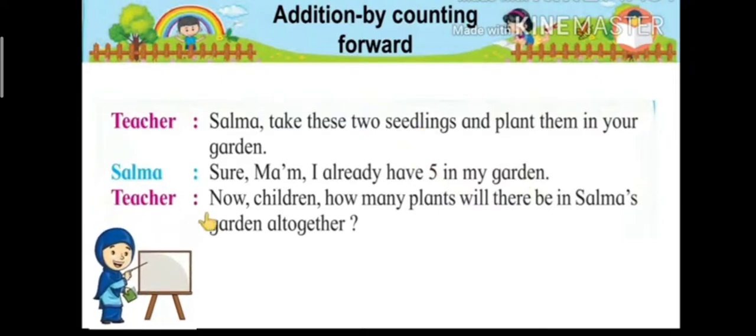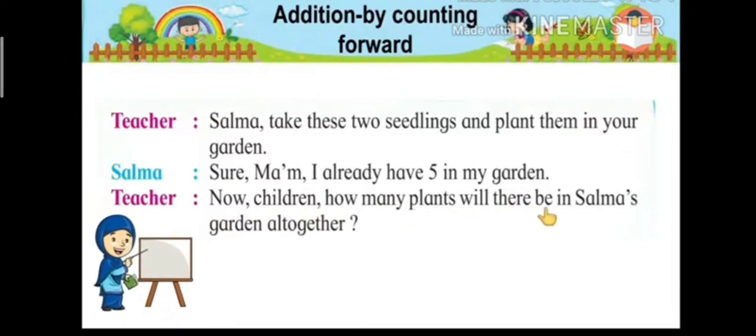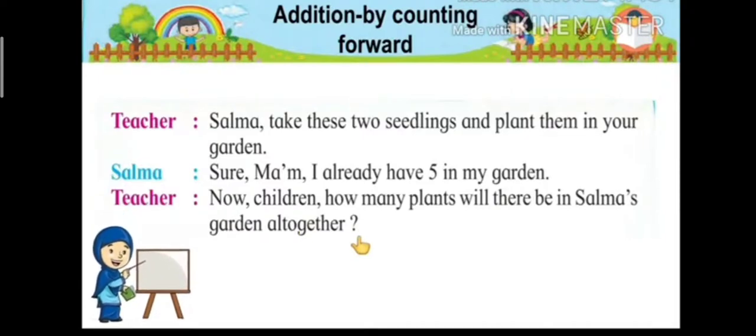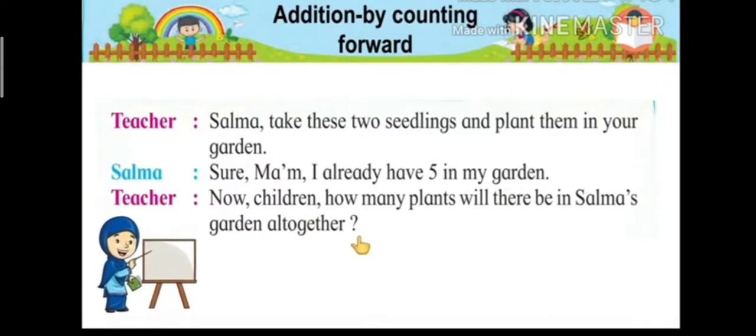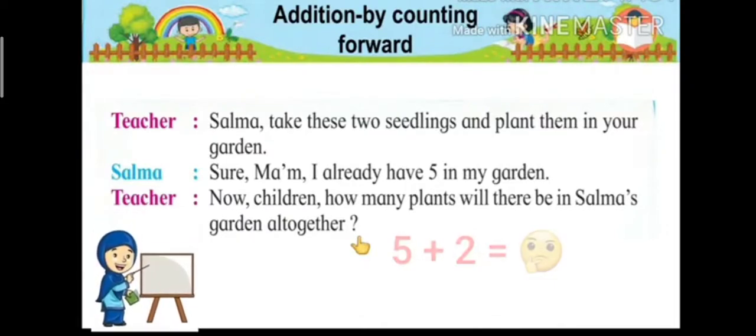Then teacher says, Now children, how many plants will there be in Salma's garden altogether? The teacher asked a question for all students. Now, how many seedlings will be in Salma's garden total? It means we have to find addition of five and two.